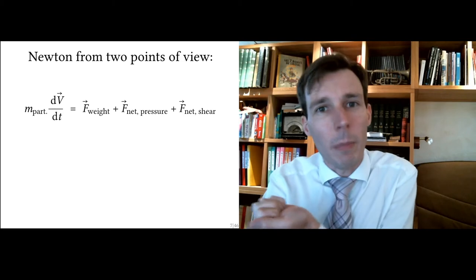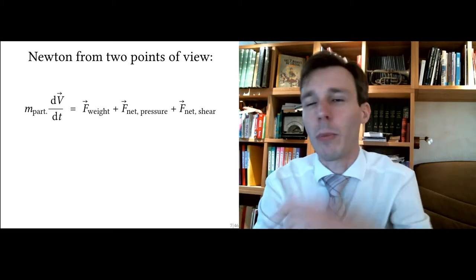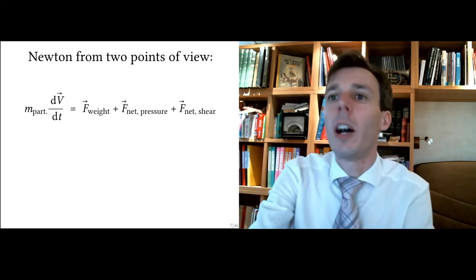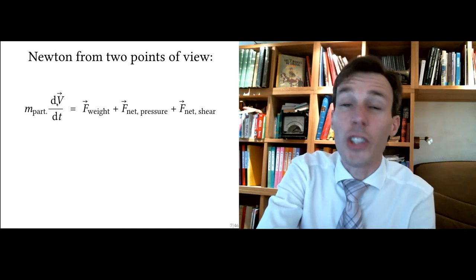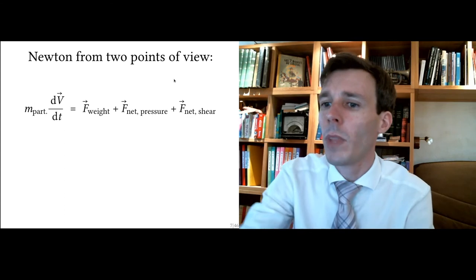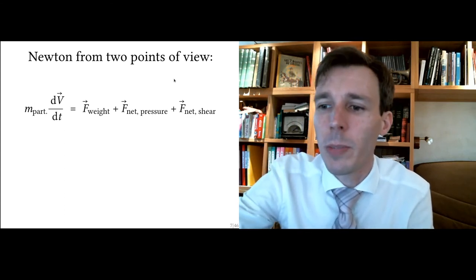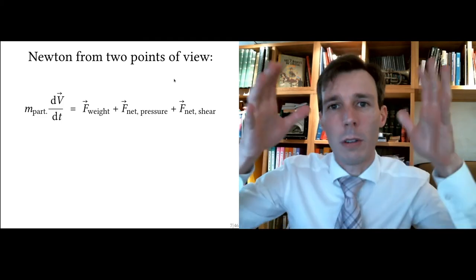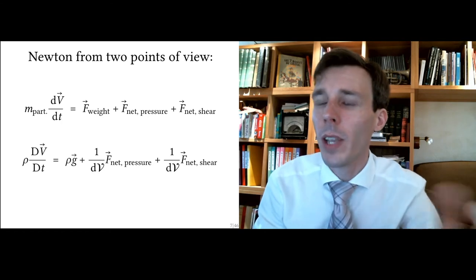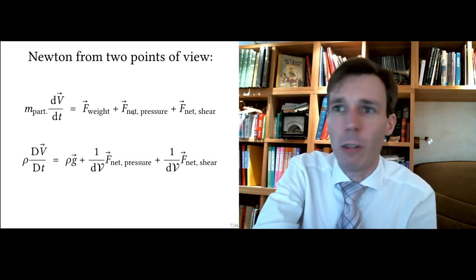From the point of view of the particle — tracking it like a solid object such as a satellite or a car — the mass times the change in velocity equals the sum of three forces: weight, pressure, and shear. But we want to use not this viewpoint but the viewpoint of the stationary grid through which the fluid is flowing. So we rewrite this equation by dividing everything by the volume.